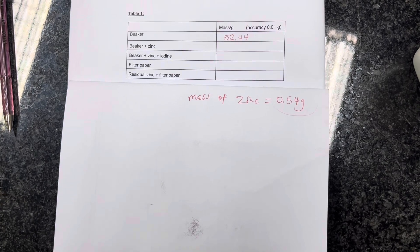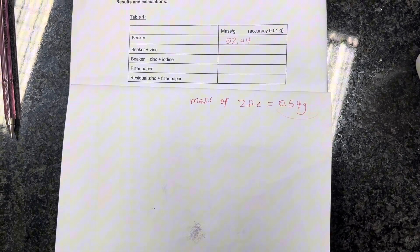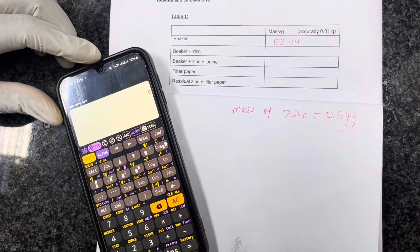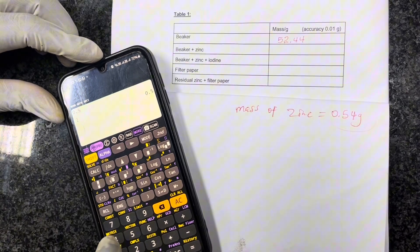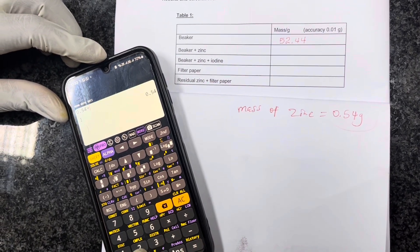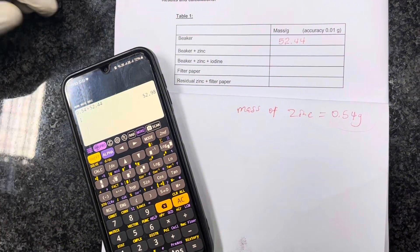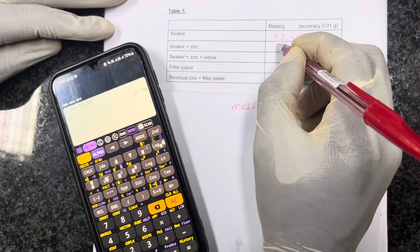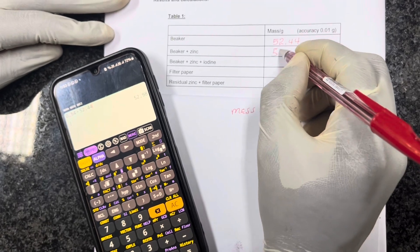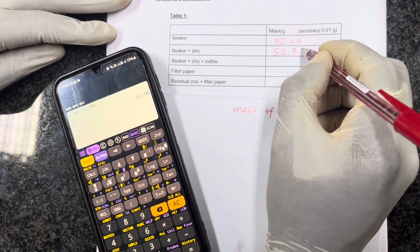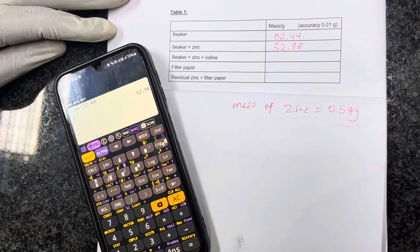So on my table, I have to find the mass of the beaker and zinc. So I just have to take my calculator and add the two masses, the mass of the zinc and also the mass of the beaker. So I'm pressing the calculator here to find that mass and it reads as follows. It's 52.98. That's the mass.